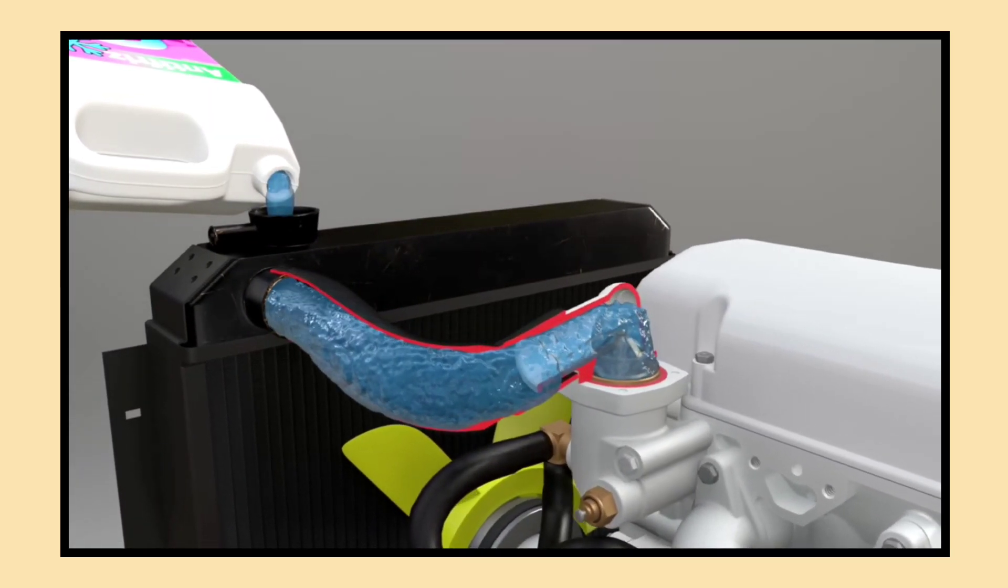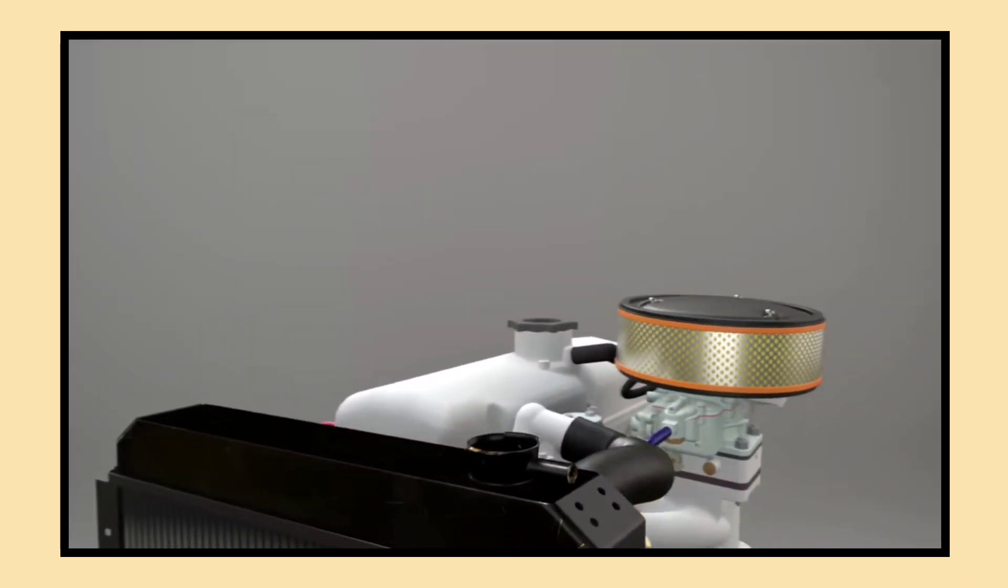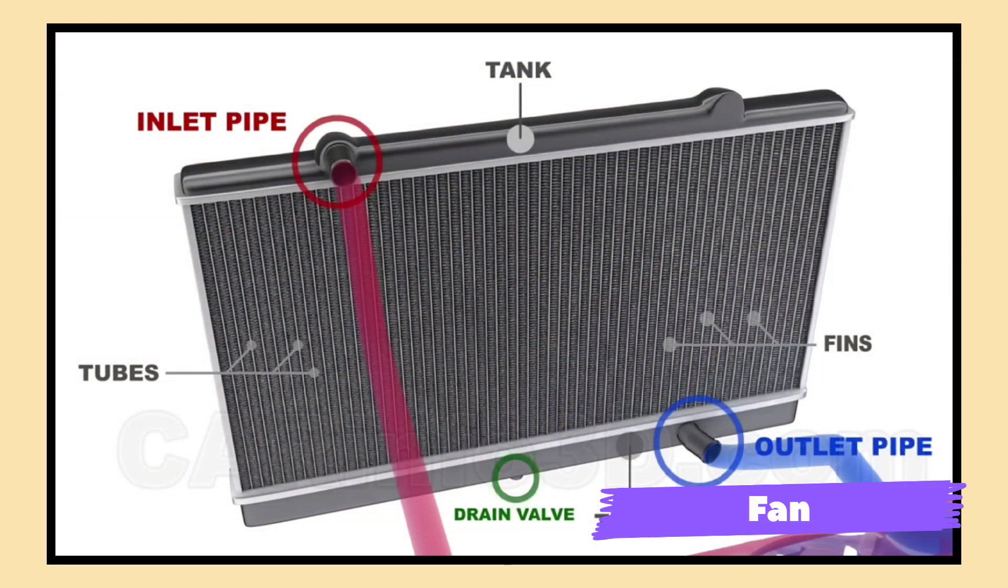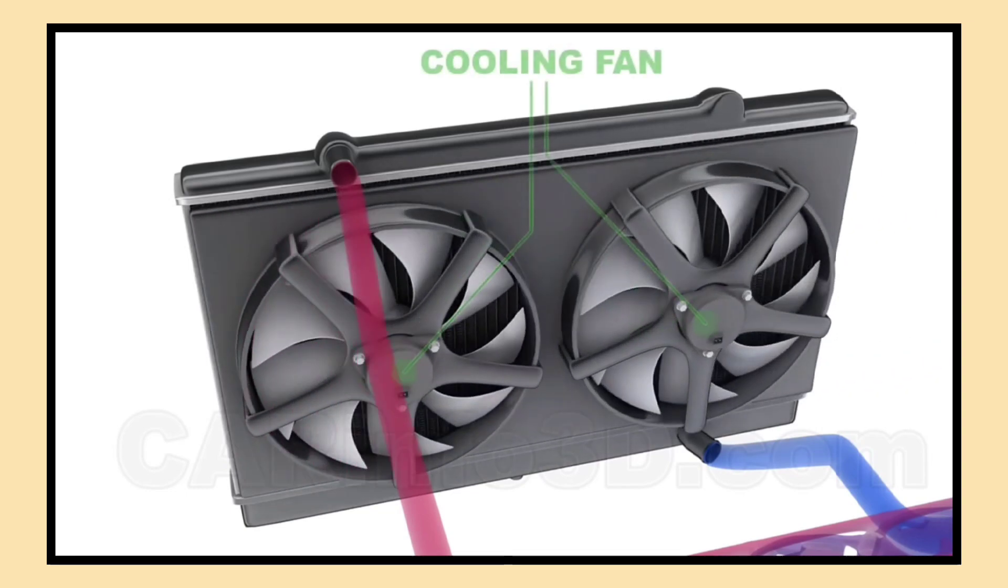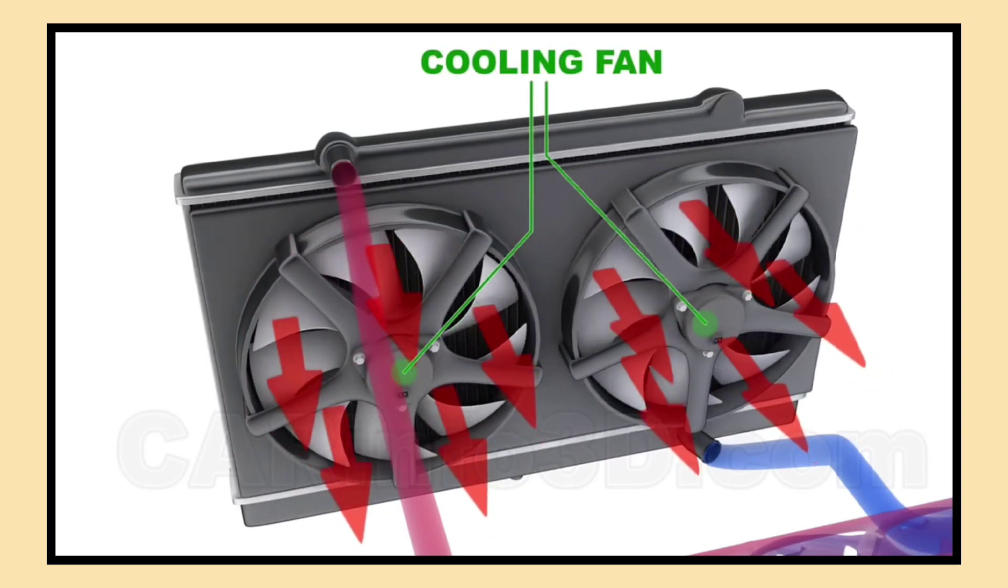The hoses connect the radiator to the engine, allowing coolant to flow back and forth. Lastly, there's the fan, which can be either electric or belt-driven. This fan helps pull air through the radiator, especially when the vehicle is stationary.